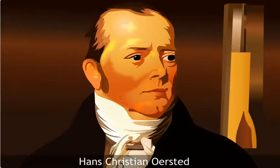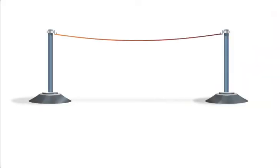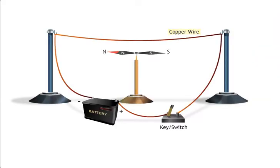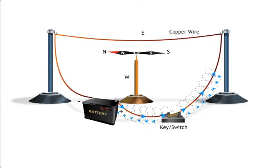Hans Christian Oersted conducted an experiment to demonstrate that electricity produces a magnetic effect. The experiment is set up as you can see. Let's see what happens if we close the key to allow current to pass from south to north. The magnetic needle originally points north.